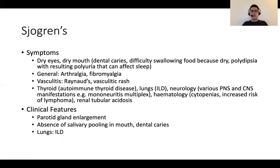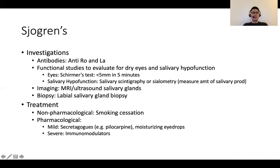In a Station 5 case with laboratory investigations suggestive of renal tubular acidosis, it's important to ask for a history of secondary causes such as Sjogren's. Clinical features include parotid enlargement, absence of salivary pooling in the mouth, dental caries, and on lung examination, looking out for ILD. Investigations include anti-Ro and anti-La antibodies. Functional studies for dry eyes and salivary hypofunction include Schirmer's test and salivary scintigraphy or sialometry. Imaging of the glands and biopsy can also be considered.